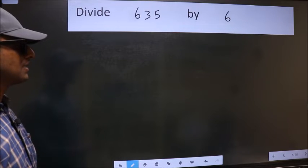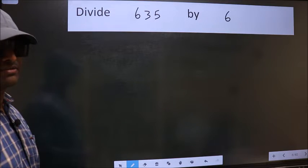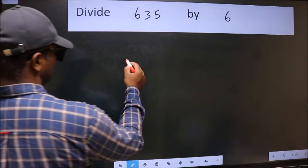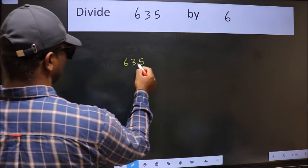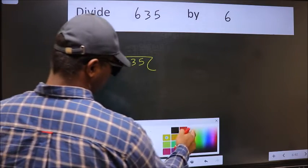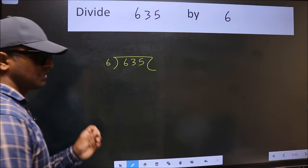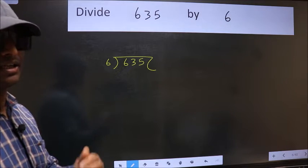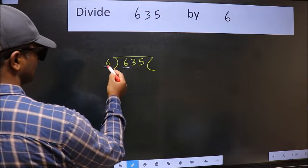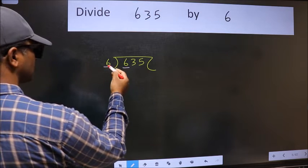Divide 635 by 6. To do this division, we should frame it in this way: 635 here and 6 here. This is your step one. Next, here we have six and six here. When do we get six in the six table?